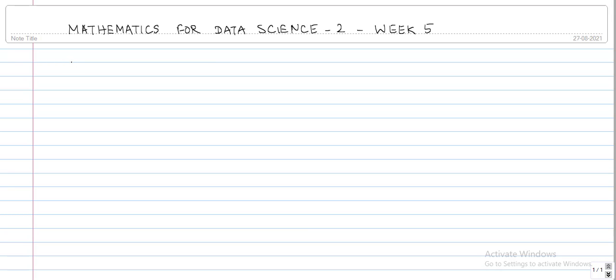So the system that we shall solve today is: x minus 3y plus z equals 4, minus x plus 2y minus 5z equals 3, and 5x minus 13y plus 13z equals 8.